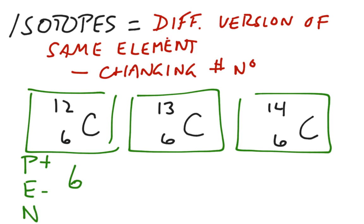In this example at the left, we have 12 minus six, six neutrons. In the example in the middle, we have 13 minus six, seven neutrons. In the example on the right, we have 14 minus six, eight neutrons. While the protons and electrons remain the same in an isotope, the neutrons change, and therefore, the overall mass changes.